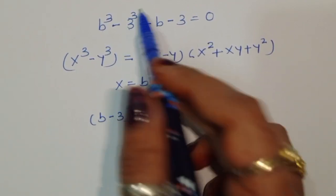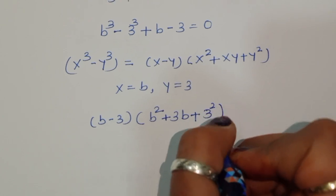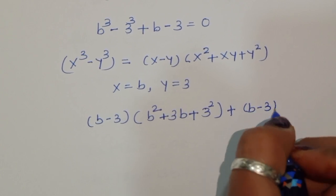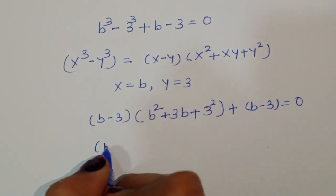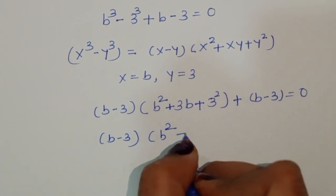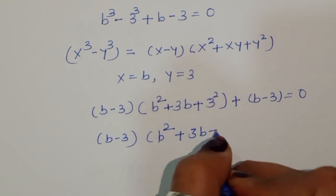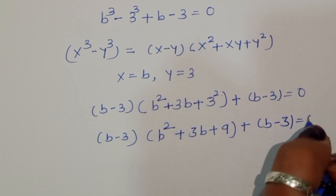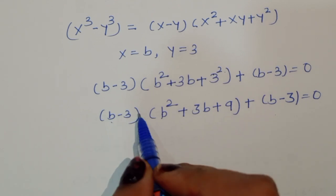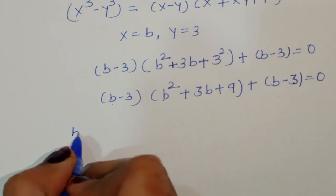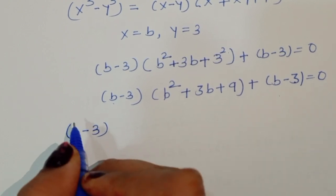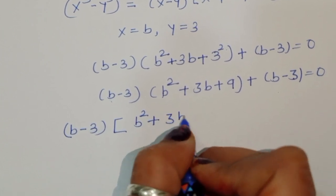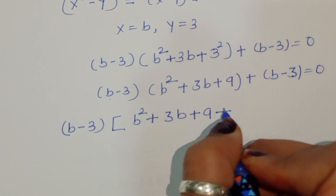So we can write: (b minus 3) times (b² plus 3b plus 9) plus (b minus 3) is equal to 0. You can see here b minus 3 appears twice, so we can take (b minus 3) as a common factor.